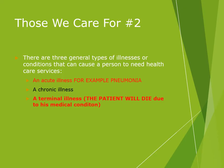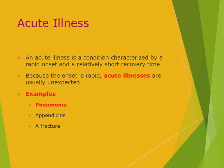There are three general types of illnesses or conditions that cause a person to need healthcare services. An acute illness, for example pneumonia, is a condition characterized by a rapid onset and a relatively short recovery time. Because the onset is rapid, acute illnesses are usually unexpected. Examples include pneumonia, appendicitis, and a fracture.